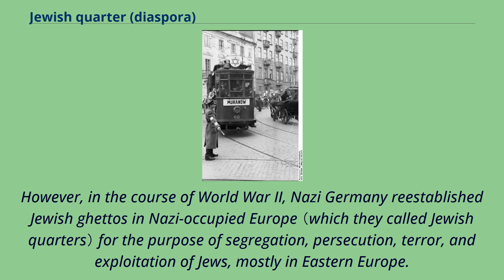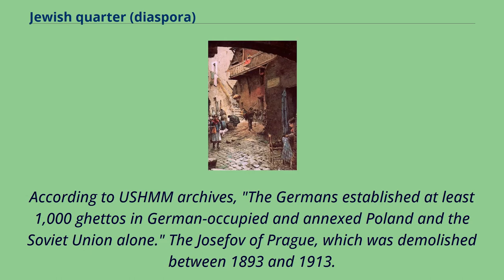However, in the course of World War II, Nazi Germany re-established Jewish ghettos in Nazi-occupied Europe for the purpose of segregation, persecution, terror and exploitation of Jews, mostly in Eastern Europe. According to USHMM archives, the Germans established at least 1,000 ghettos in German-occupied and annexed Poland and the Soviet Union alone.